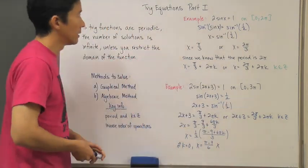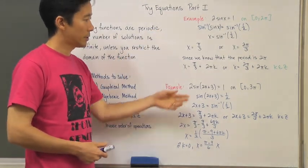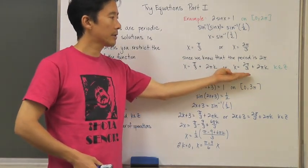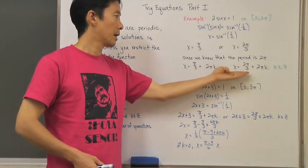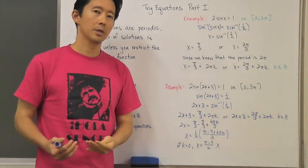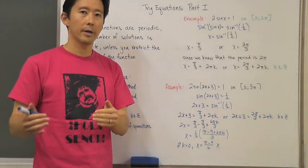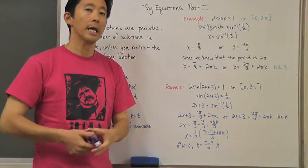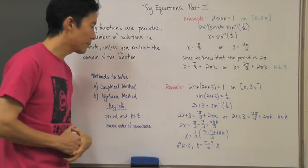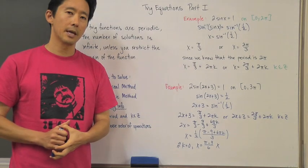To summarize: to algebraically solve trig equations, first use inverse order of operations to find all solutions without domain restrictions, including the plus two pi k terms. Then test particular integer values of k to determine whether those x values fall within the domain restriction. If they do, they are part of the solution; if not, you don't count them. We'll look at more examples and the graphical method in class.